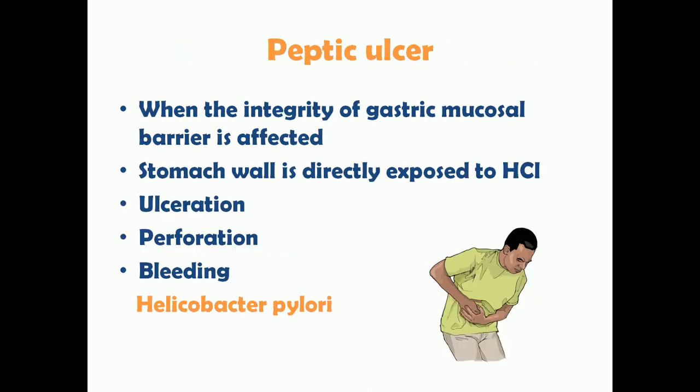Peptic ulcer occurs when the integrity of the gastric mucosal barrier is compromised. When this barrier is disrupted, the stomach wall is directly exposed to hydrochloric acid, leading to ulceration or erosion, which can progress to perforation and severe bleeding. The bacterium most commonly implicated in peptic ulcer disease is Helicobacter pylori.